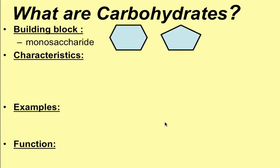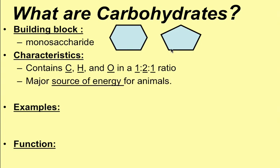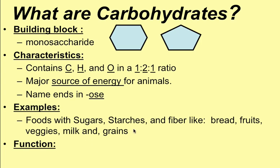So what exactly are carbohydrates? They're made of their building block, called a monosaccharide. There are two different types — we'll focus on the six-sided one today, with the five-sided one being more relevant to nucleic acids. Carbohydrates contain carbon, hydrogen, and oxygen in a ratio of 1:2:1 — for every one carbon, there are two hydrogens and one oxygen. They are our major energy source, their names almost always end in '-ose', and examples include sugars, starches, fibers, breads, fruits, veggies, milk, and grains. Their function is energy and energy storage.